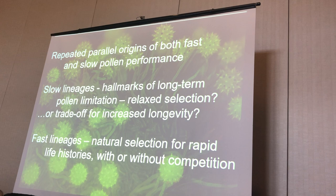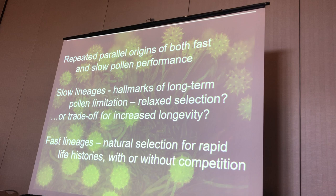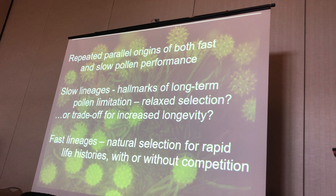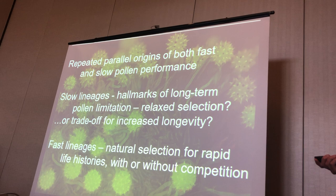There are repeated parallel origins of both fast and slow pollen performance — slow lineages and fast lineages — leaving lots of room for people to do studies in lineages that have experienced long-term weak or strong pollen competition. There's lots of evidence for natural selection, and hopefully these findings can be applied back to the sporophyte level. Thanks to my graduate student John Reese — he's looking for a teaching job if anybody knows of one — and to great undergraduates and others. Thanks so much.